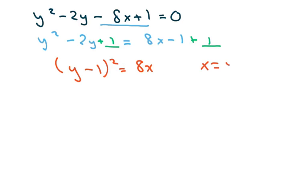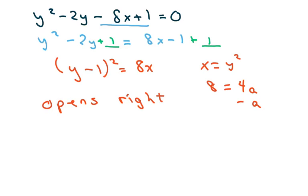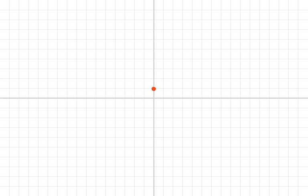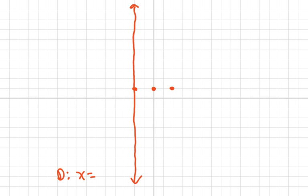This has the form x equals y squared, which means it opens to the right. Setting 8 equal to 4a gives a equals 2. Since it opens right, I add a to the x-coordinate of the vertex. The vertex is 0 comma 1. The directrix goes to the left, and since a equals 2, the directrix is x equals negative 2.